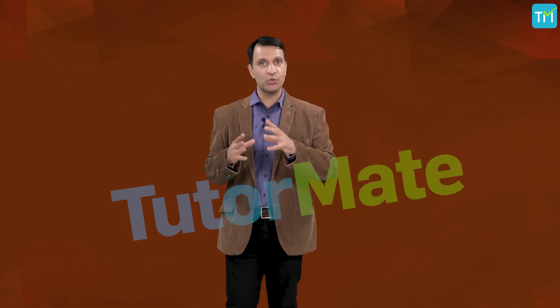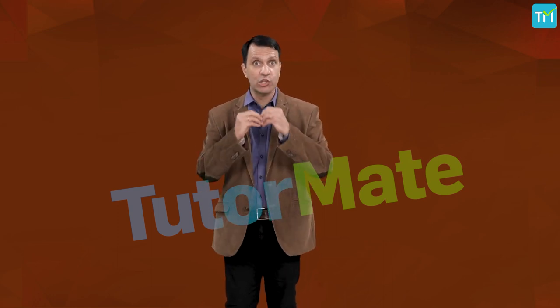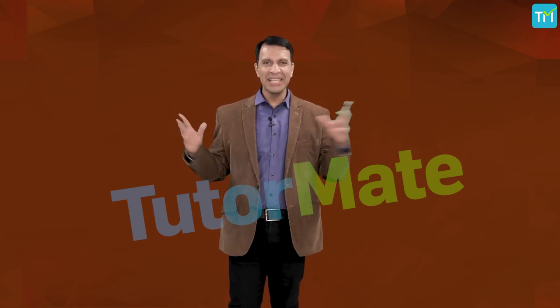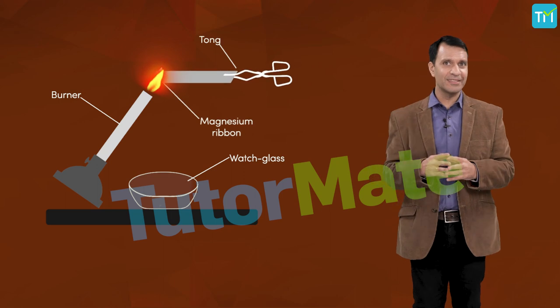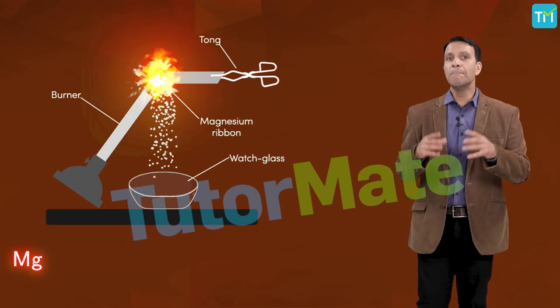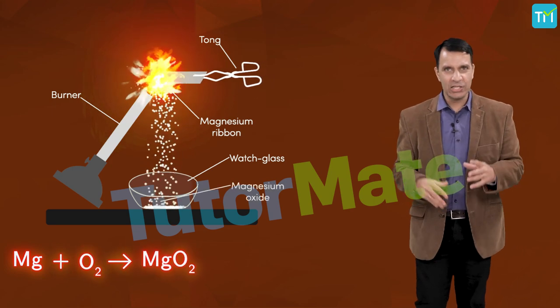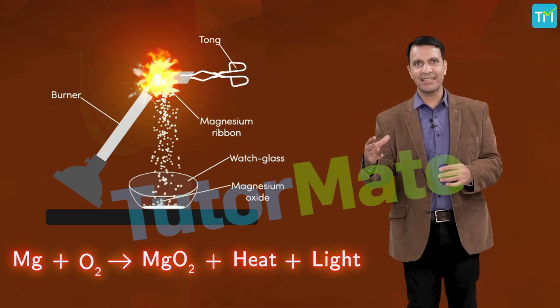Sometimes during combustion, sound may also be produced — it can be a hissing or a crackling sound, or can also be a loud explosion. If you recall, there was an activity in your previous class on the burning of a magnesium ribbon. You must have learned that magnesium, which is a metal, burns to form magnesium oxide and generates heat and light, as you can see.